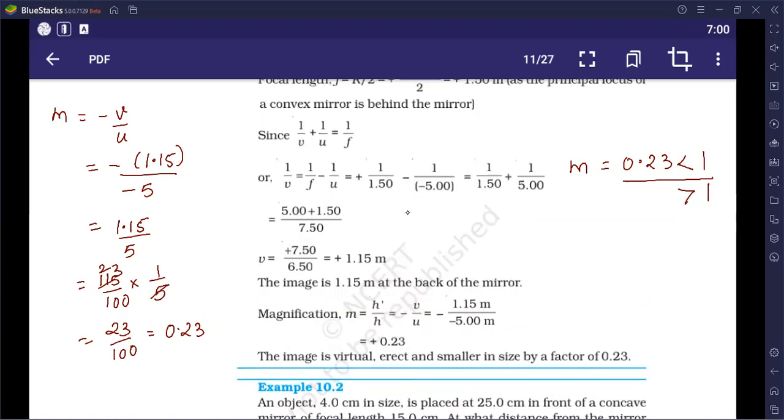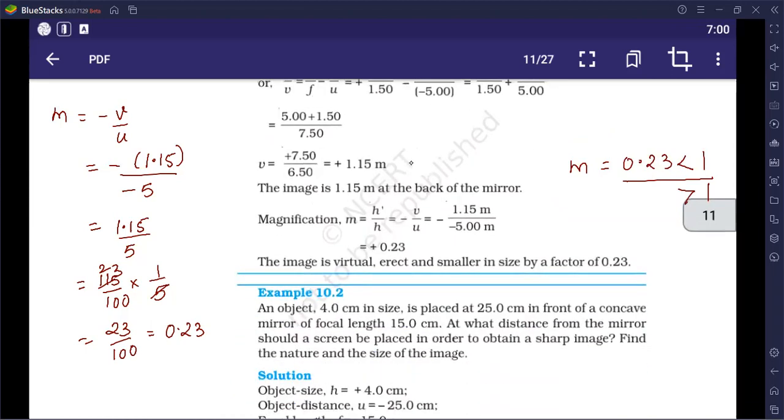This V that we got, we concluded something from it. We got 1.15, so we will write: the image is 1.15 meter at the back of the mirror. See, here we are talking about convex mirror. So, because this is about convex mirror, where will we get the image? We will get the image at the back of the mirror. This I need to make a bit more clear by showing you the ray diagram.